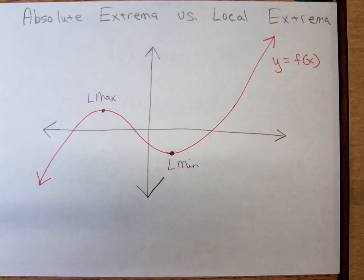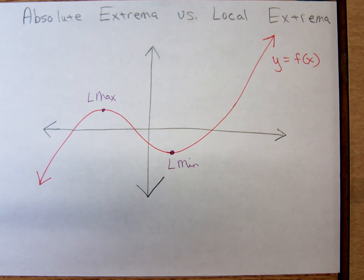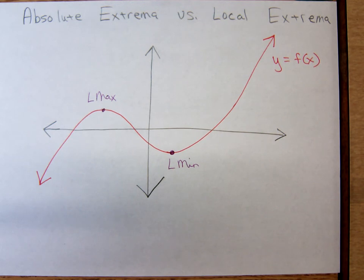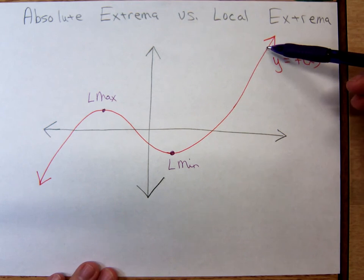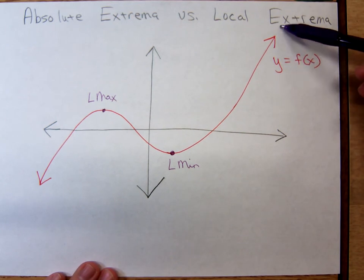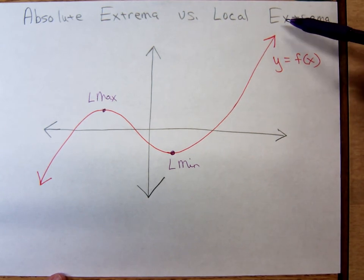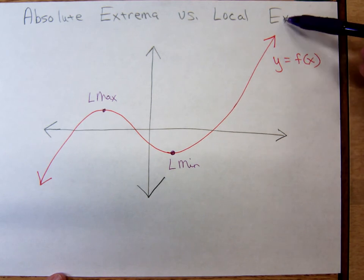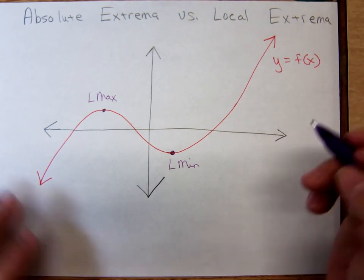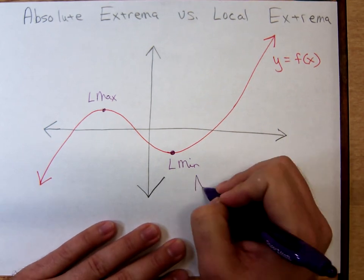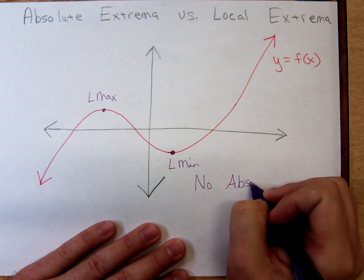Absolute extrema refers to the point or points on the graph that have absolutely the highest y-value. So we have an absolute maximum that we're looking for and an absolute minimum. Notice this graph continues to increase on the right-hand side — the function keeps going forever and ever. So is there one y-value bigger than all the others? No, this function keeps getting bigger and bigger, so there's no absolute maximum. The function is increasing without bound.